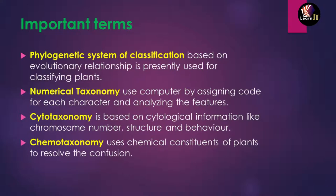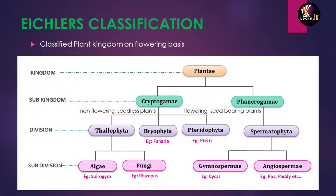Now let us look at Ashler's classification of the plant kingdom. Ashler classified the kingdom Plantae into sub-kingdoms, divided into two categories: Cryptogamae and Phanerogamae. Cryptogamae includes non-flowering and seedless plants, while Phanerogamae contains flowering and seed-bearing plants. Plantae was classified by Whittaker and sub-classified by Ashler into these two sub-kingdoms.